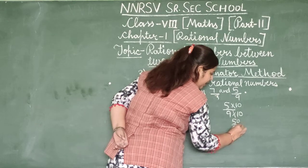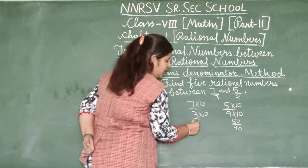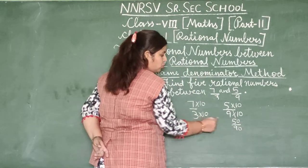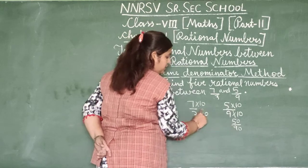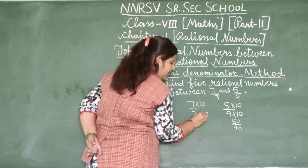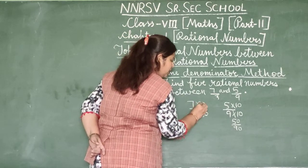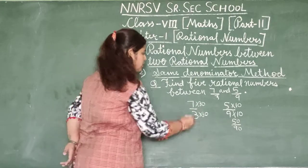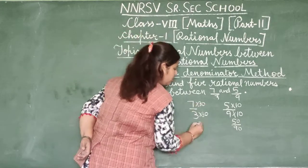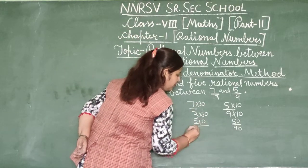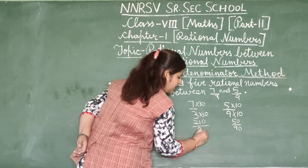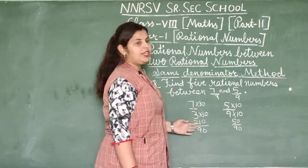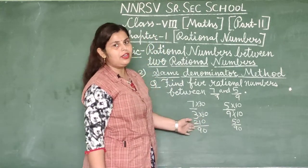This gives us 50/90 and 210/90. Between 50 and 210 there are many numbers. We can write 25 numbers between both fractions, all with denominator 90. These all lie between 7/3 and 5/9.